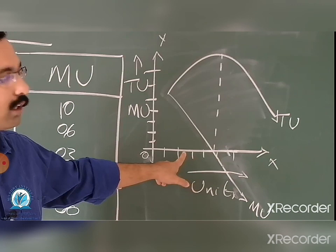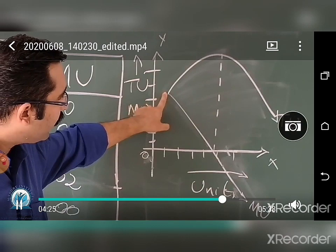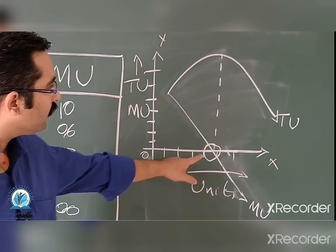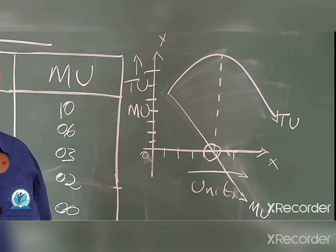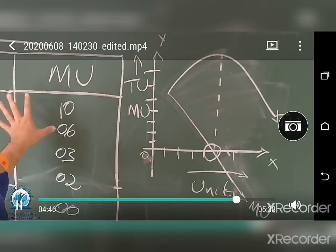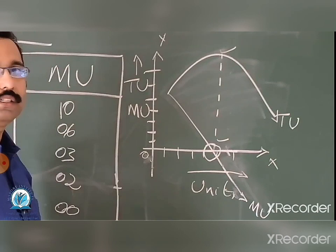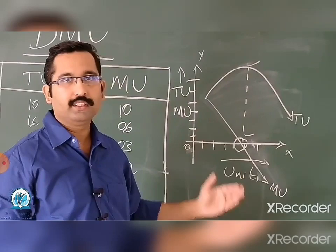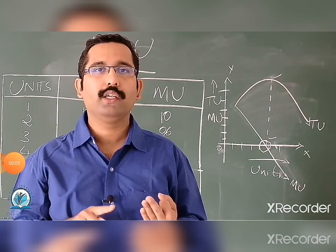When we start consuming units of the given commodity, utility increases, reaches a maximum, and then decreases. Meanwhile, marginal utility keeps reducing — it intersects the X-axis, meaning at that point marginal utility equals zero, and then it goes below the X-axis, becoming negative. One very important observation: when total utility (TU) is at its maximum, marginal utility (MU) is zero. When TU starts to decline, MU becomes negative.